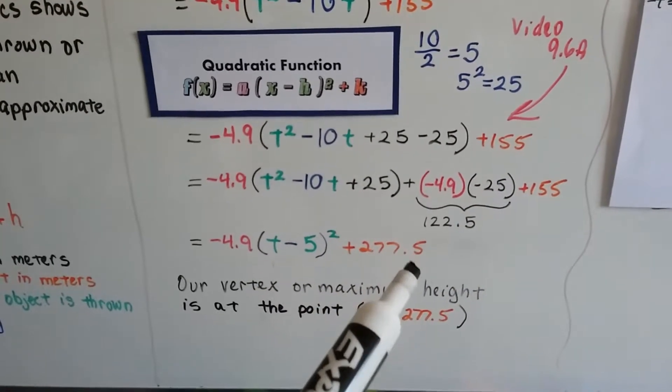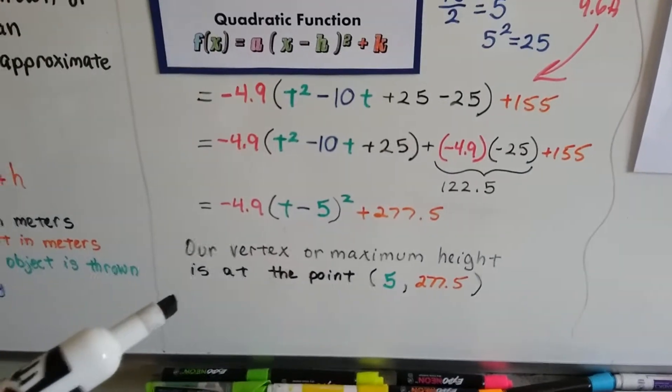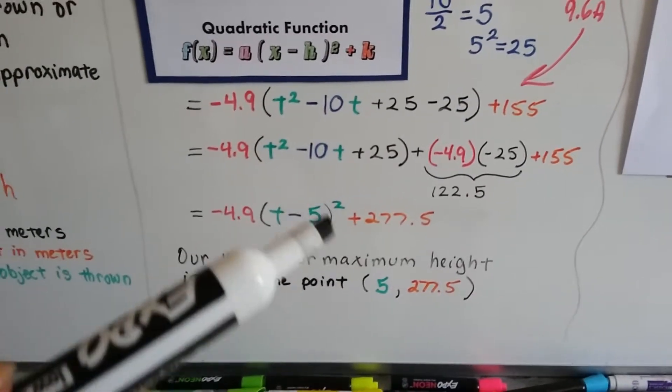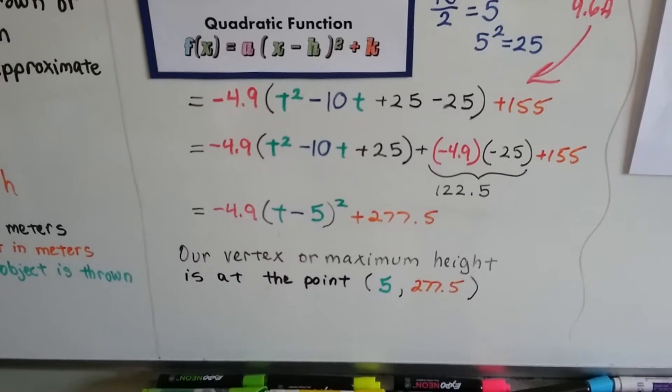When we add these two together, the 122.5 and the 155, we get 277.5. So we know our vertex, or maximum height, is at the .5 and 277.5.